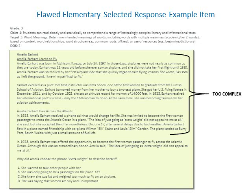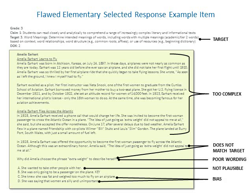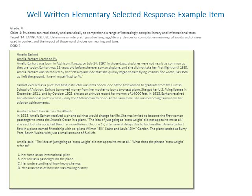First, the stimulus text is too complex for grade 3 students. Second, the item is not aligned to the assessment target—the target requires students to determine the meaning of words, but the item is more about understanding the figurative connotation of a phrase. The stem is wordy, confusing, and contains unnecessary information. Option A is not very plausible given the context of the passage. Finally, options C and D contain bias and sensitivity issues.